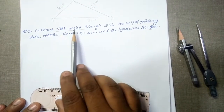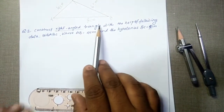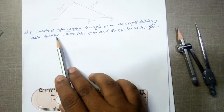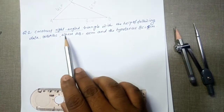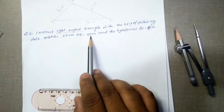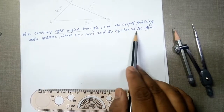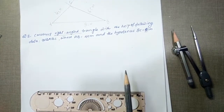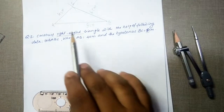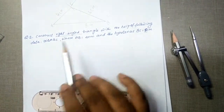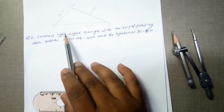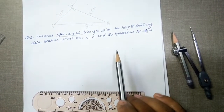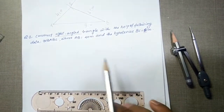It says that: construct a right-angled triangle with the help of the following data — that is triangle ABC, where AB is 4 cm, and the hypotenuse is BC, that is 5 cm. So this problem tells that it is a right-angled triangle; you have been given two sides and one angle, which is the right angle, 90 degrees.